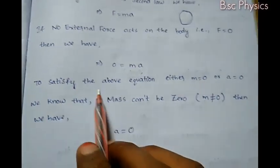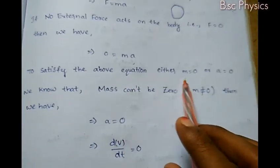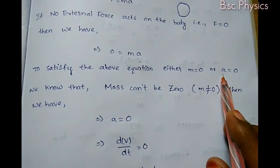To satisfy the above equation F = ma with F equal to zero, either M is zero or A is zero.